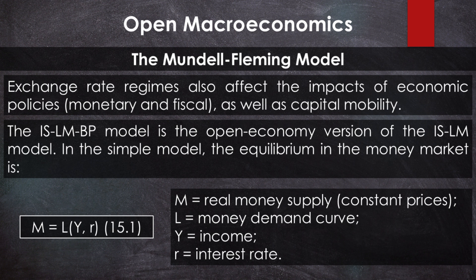The Mundell-Fleming model, or IS-LM-BP model, is an open economy version of the IS-LM model. In the simple IS-LM model with a closed economy, we have equation 15.1, which provides the condition for equilibrium in the money market — the LM curve — where M equals L as a function of Y and R. M equals real money supply at constant prices, L equals money demand curve as a function of income Y and interest rate R, Y equals income level, R equals interest rate.